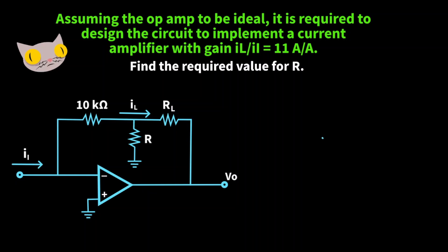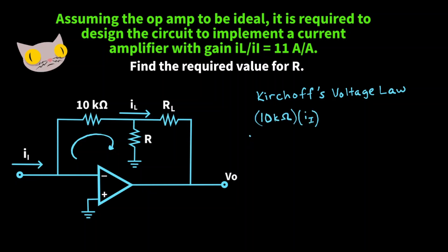Let's find the required value for R. Since the op amp is ideal and it's in negative feedback, it's going to draw no current. So we can apply Kirchhoff's voltage law in the first loop. We take 10 kΩ times II — remember voltage equals resistance times current — and add to that (II minus IL) multiplied by R, and that has to equal zero.